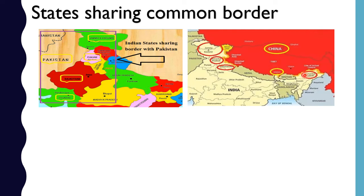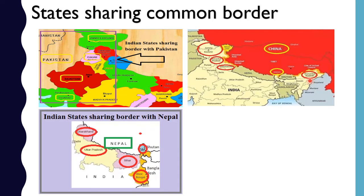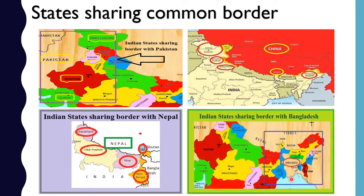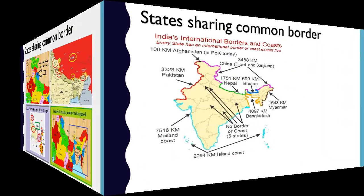Coming to India's neighboring countries: observing the map, Sri Lanka is an island. To the northwest you have Pakistan and Afghanistan. To the north you will find China, Nepal, and Bhutan. To the east you will find Myanmar and Bangladesh. To the south are Sri Lanka and Maldives — Maldives is found below the Lakshadweep islands.